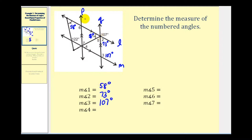Looking at the parallel lines P and Q, angle one and angle four are alternate interior angles and therefore congruent. So the measure of angle four is also 58 degrees.